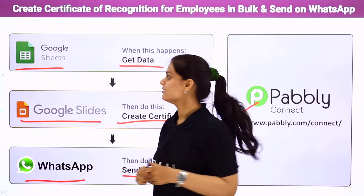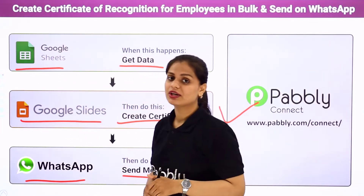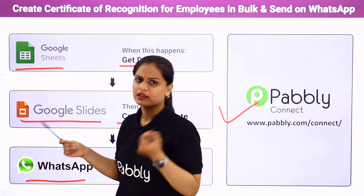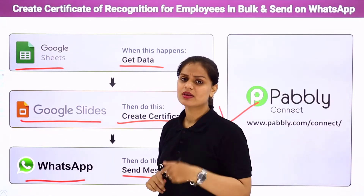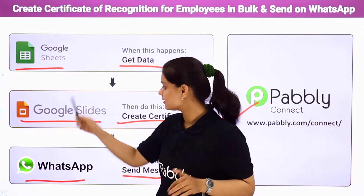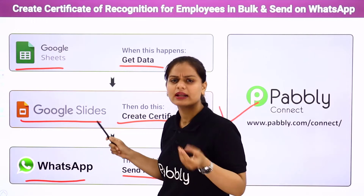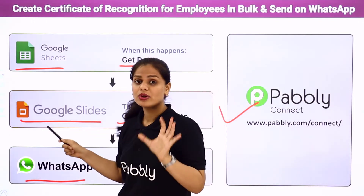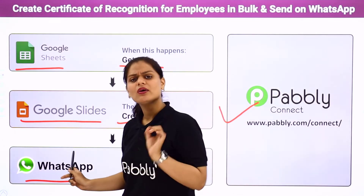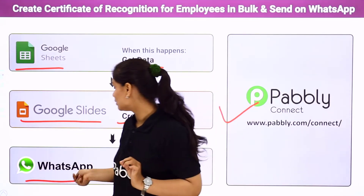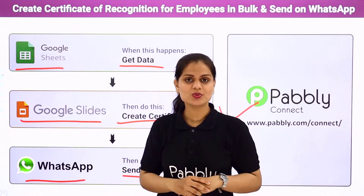For example, if I have data of 10 employees — John, Alex, Mary — with their WhatsApp number, email address and other details, the certificates are going to get created automatically for all of them. Then messages will be sent on WhatsApp to Alex, John, Mary — all employees automatically. So we will be sending bulk messages on WhatsApp.